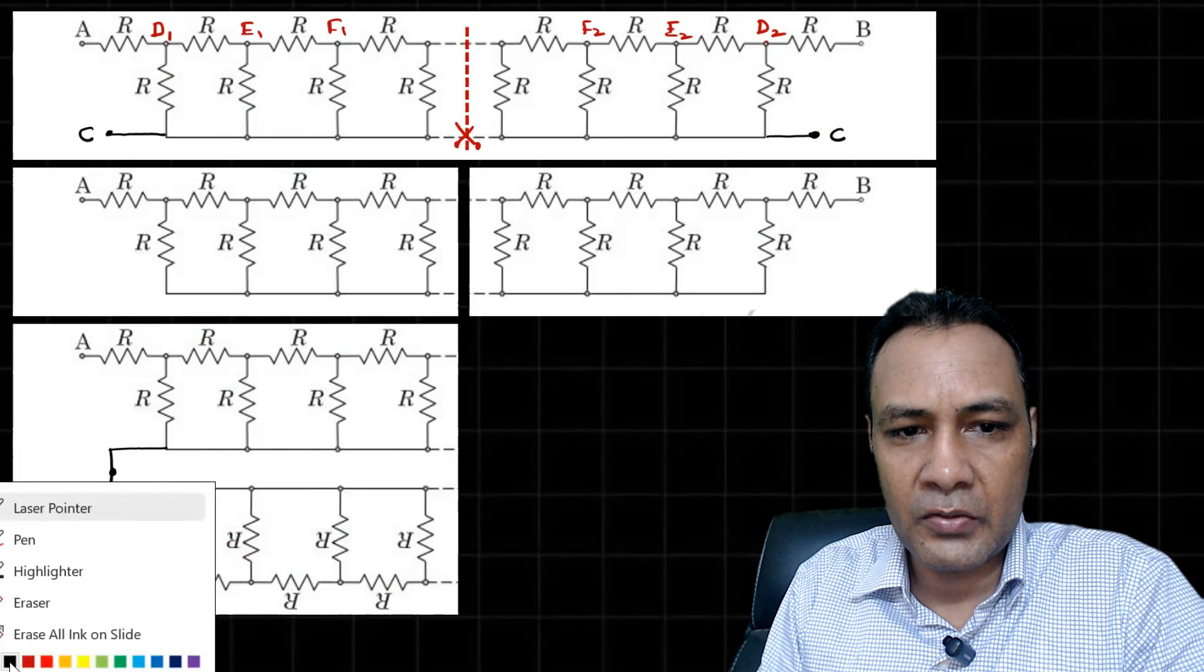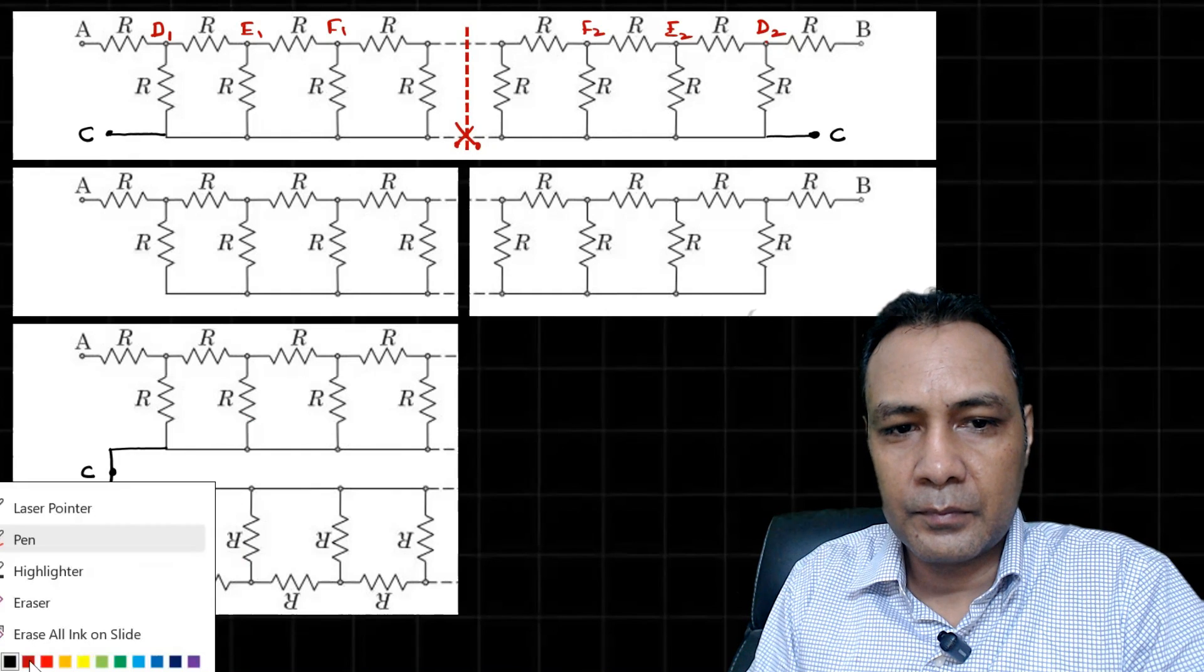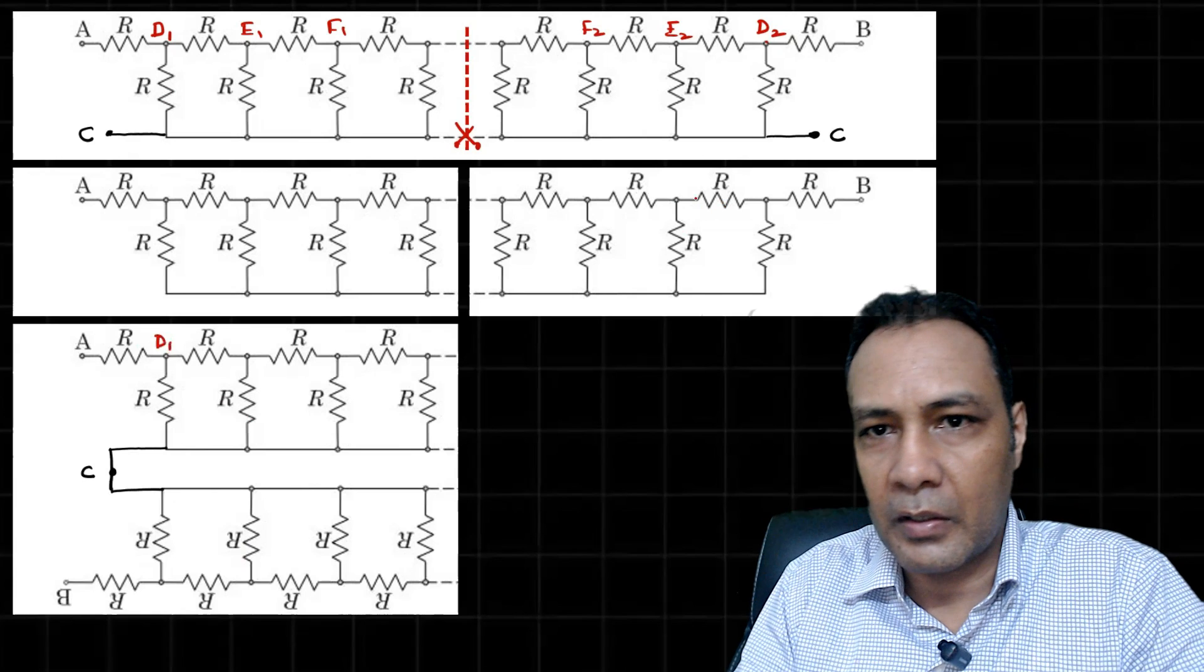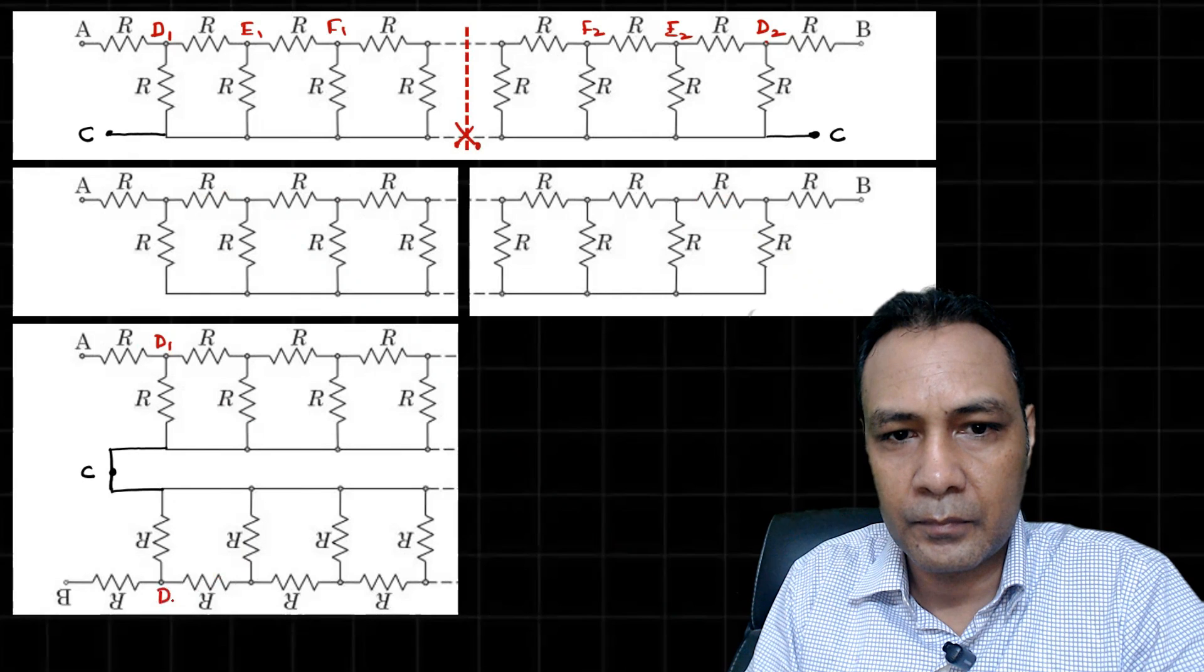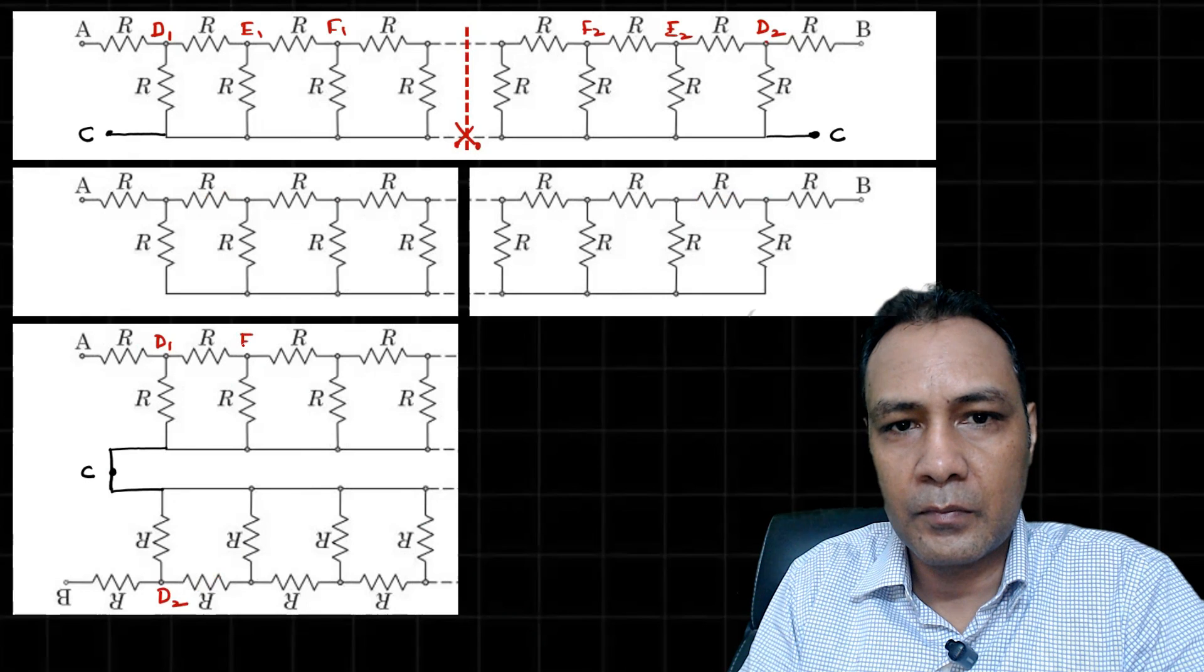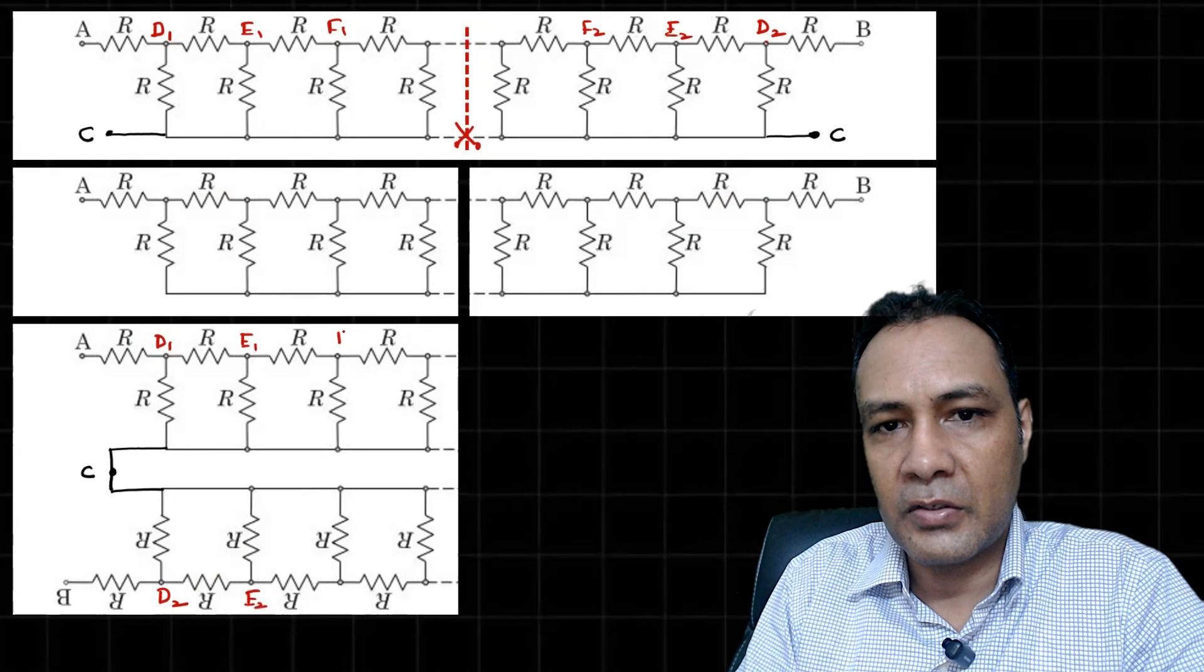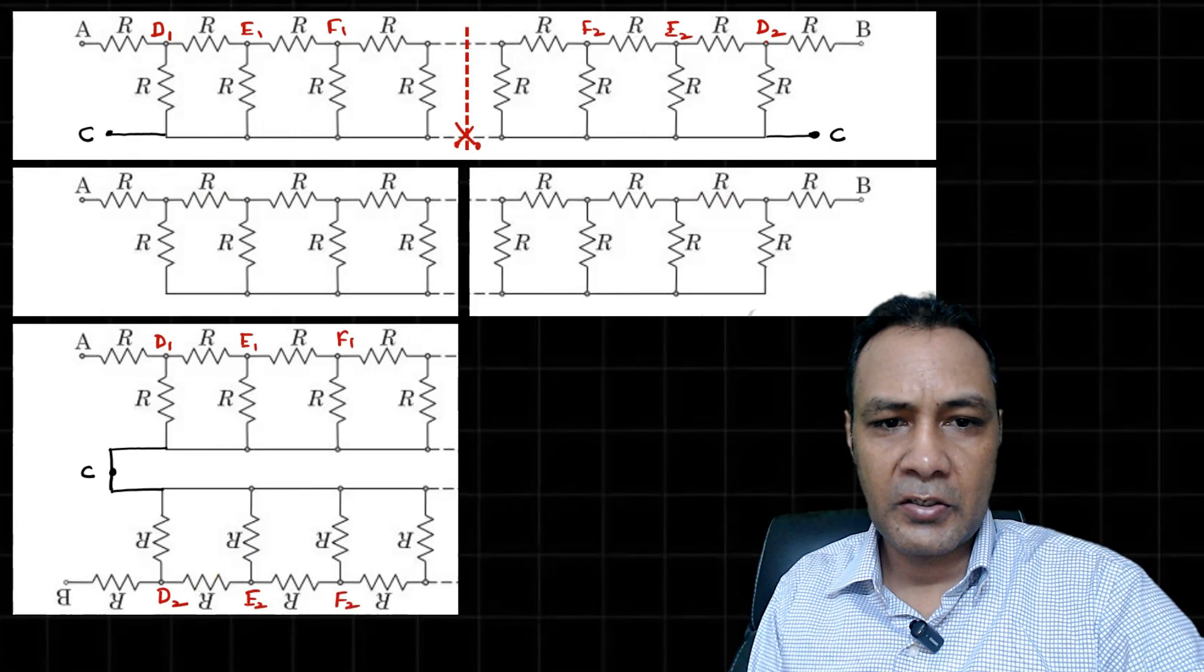Let's see points one by one. This is A, D1. And here if I cut it, this was D1, so D1 will come here. D2 will come here. This is E1 and this is E2. This is F1 and this is F2. See resistors term by term.